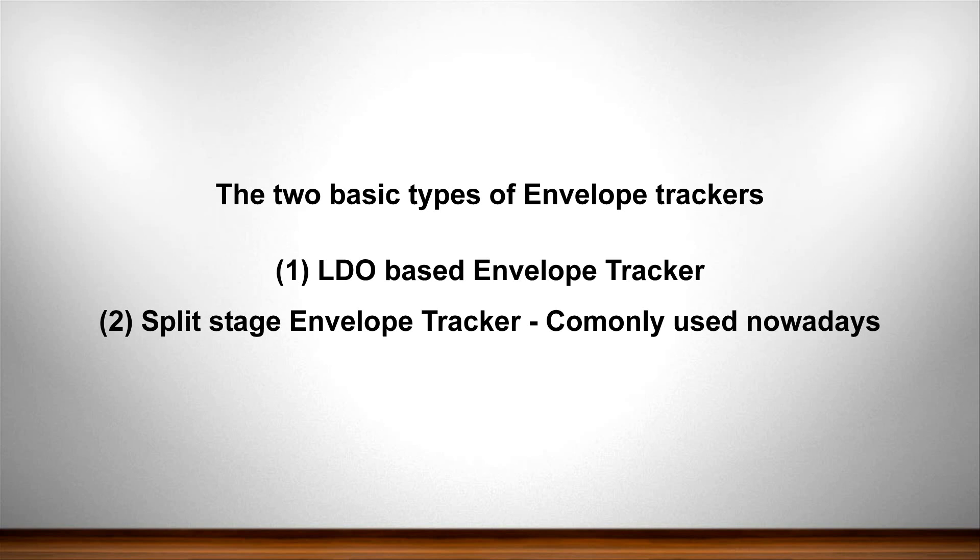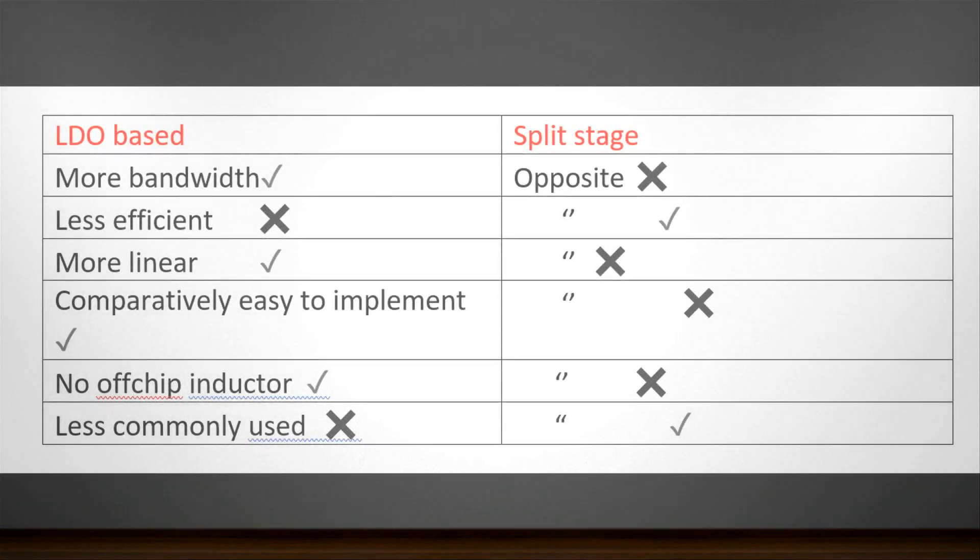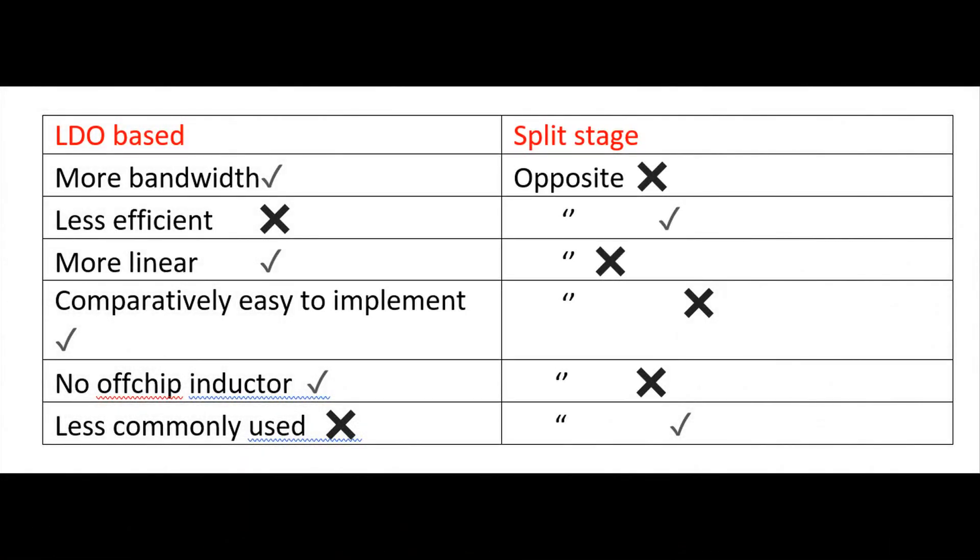The major trade-offs between the two: as I mentioned earlier, LDO based tracker has more bandwidth where the split stage is very challenging to design with high bandwidth. It does not have inherent high bandwidth, so LDO has better performance in terms of wide bandwidth.